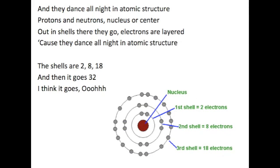And they dance all night in atomic structure. Protons and neutrons, nucleus or center. Out in shells there they go, electrons are layered, 'cause they dance all night in atomic structure. The shells are 2, 8, 18, and then it goes 32, I think it goes, ooh.